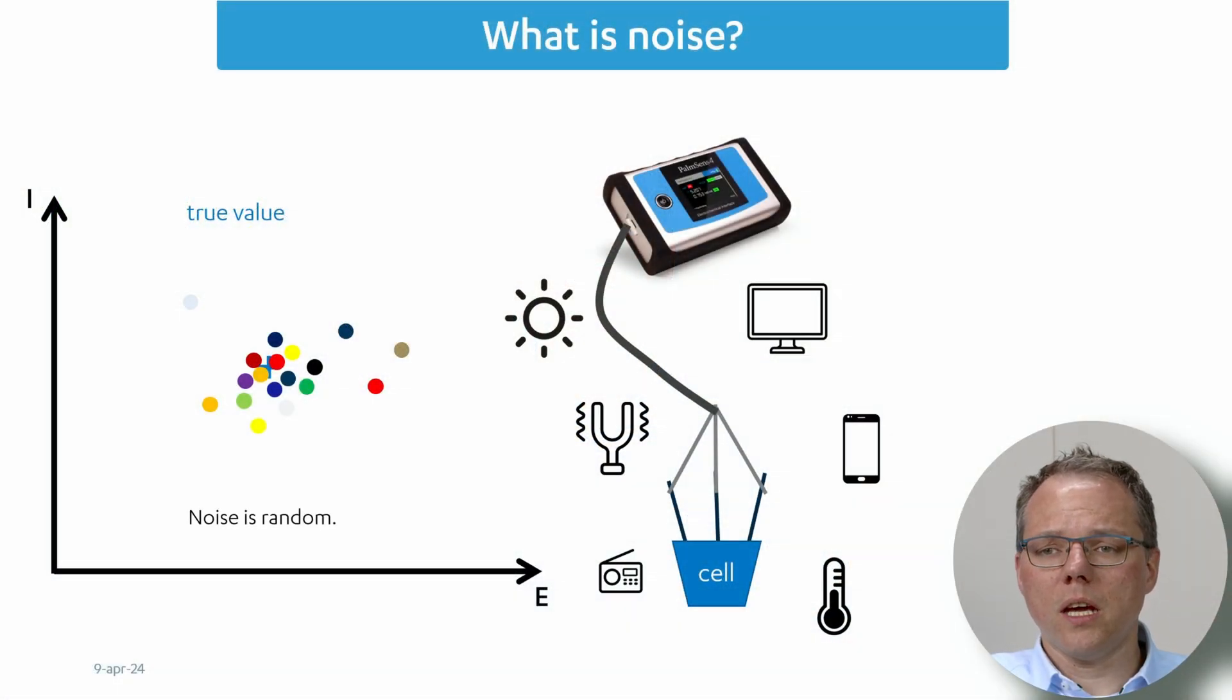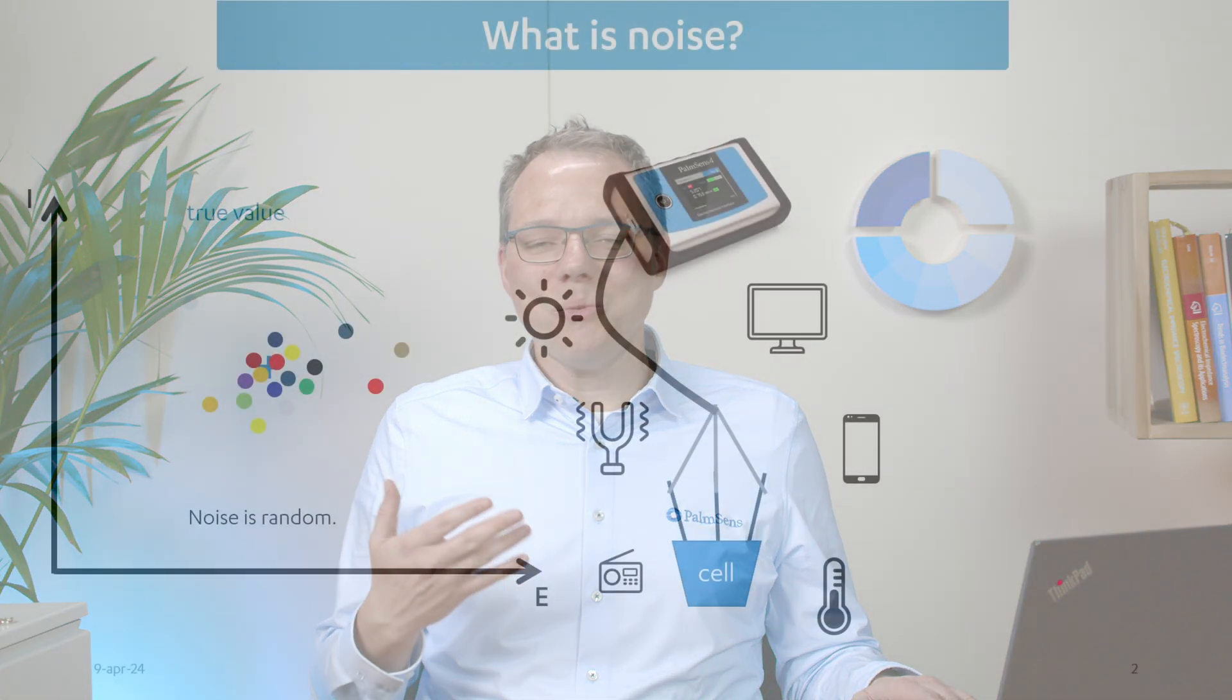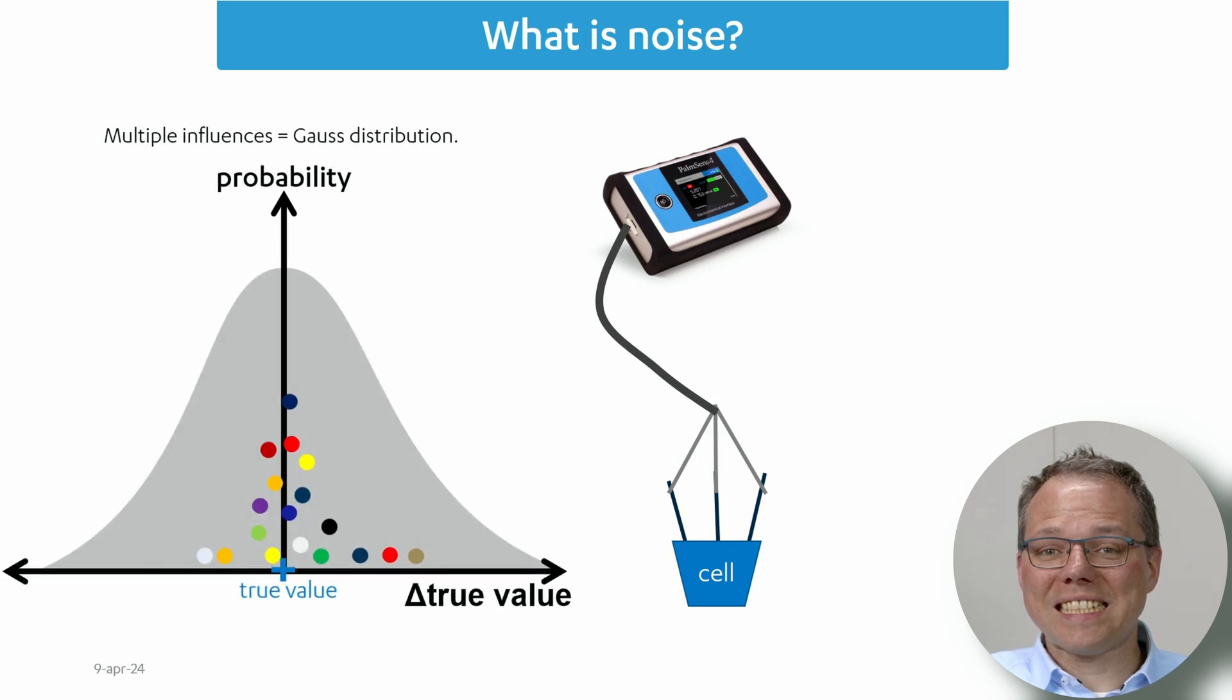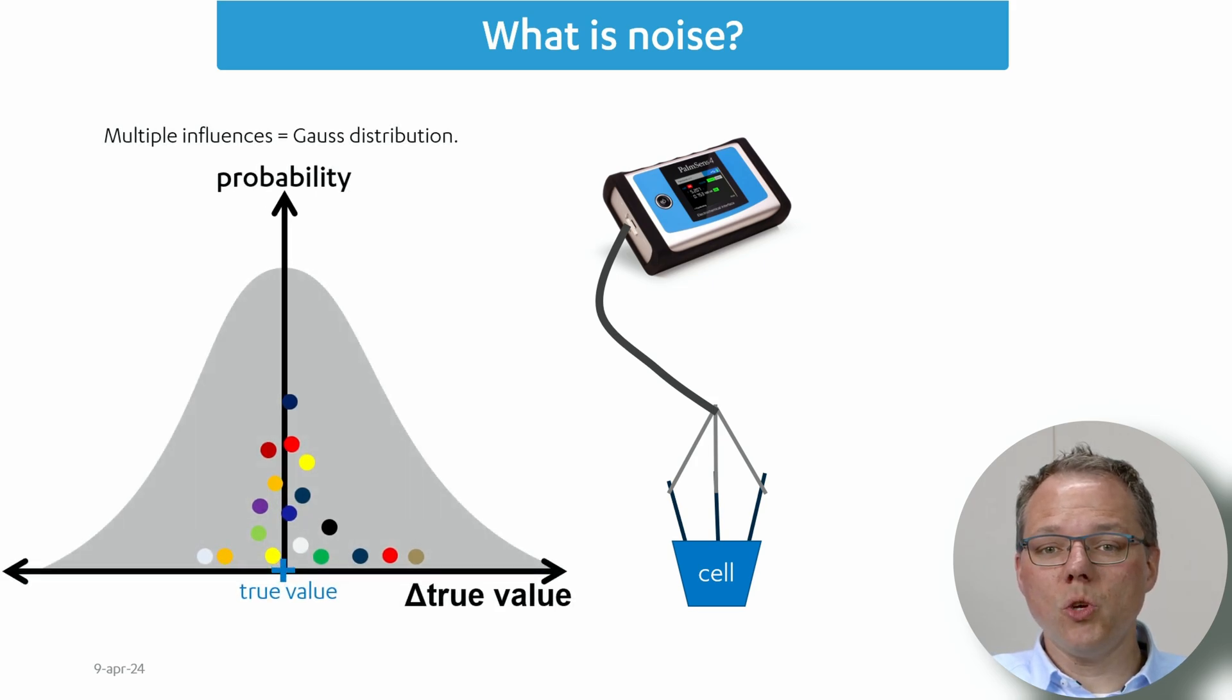When we first look at it we think this is rather random, but we can look at the statistical distribution. If we look at the values we find that actually the values do have a distribution that many people will know, especially mathematicians - it's the Gauss distribution. We see we have high probabilities for values that are close to the true value and the further away we go from the true value the less likely a value becomes to be measured.